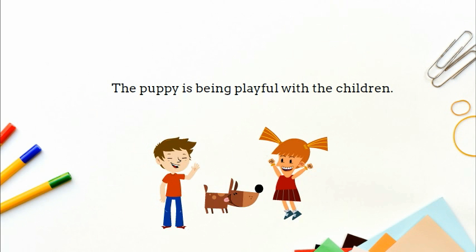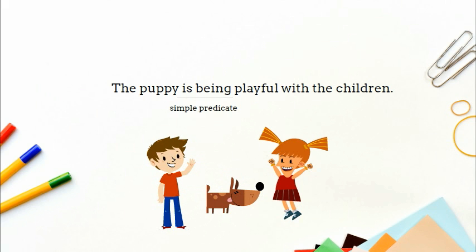Here's an example. The puppy is being playful with the children. Is being is the simple predicate or verb phrase. Being is the main verb and is linking the adjective playful back to the subject puppy.